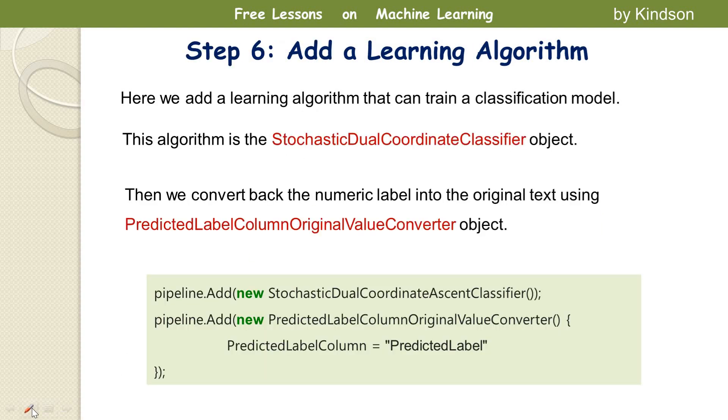In this case we want to do classification and the algorithm we are going to use is the stochastic dual coordinate classifier. Don't worry about this very strong name. It's simply a class in ML.NET.